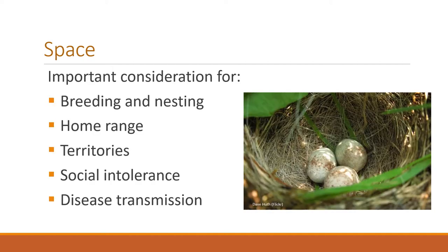The last of the four habitat categories is space. Space is important for specific parts of an animal's life history — for example, breeding and nesting. The range might not always provide adequate high-quality spaces for nesting, so making sure there's enough space for an animal to nest, fawn, have their young, or provide for their young is important. Home range and territories are also specific space requirements. Some animals are socially intolerant of having other animals in their space. Additionally, as animals start to share common space, there may be more disease transmission.